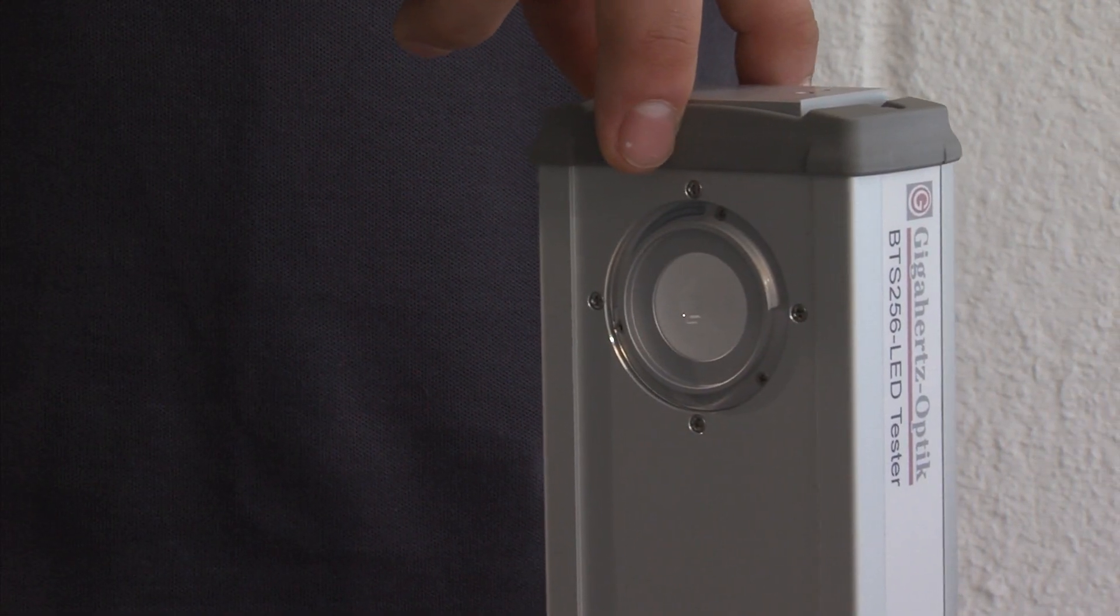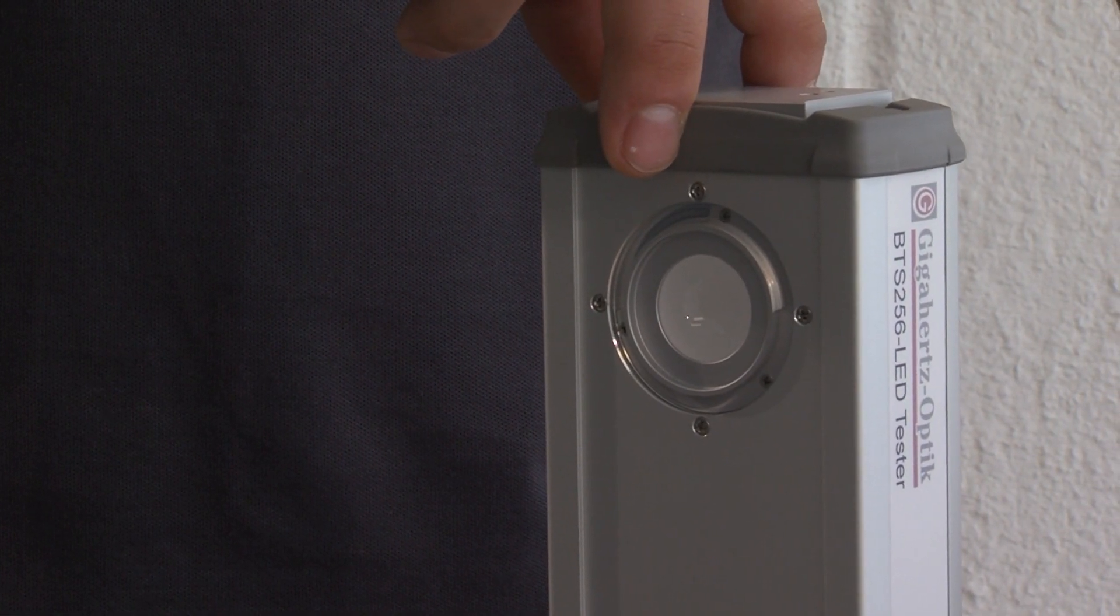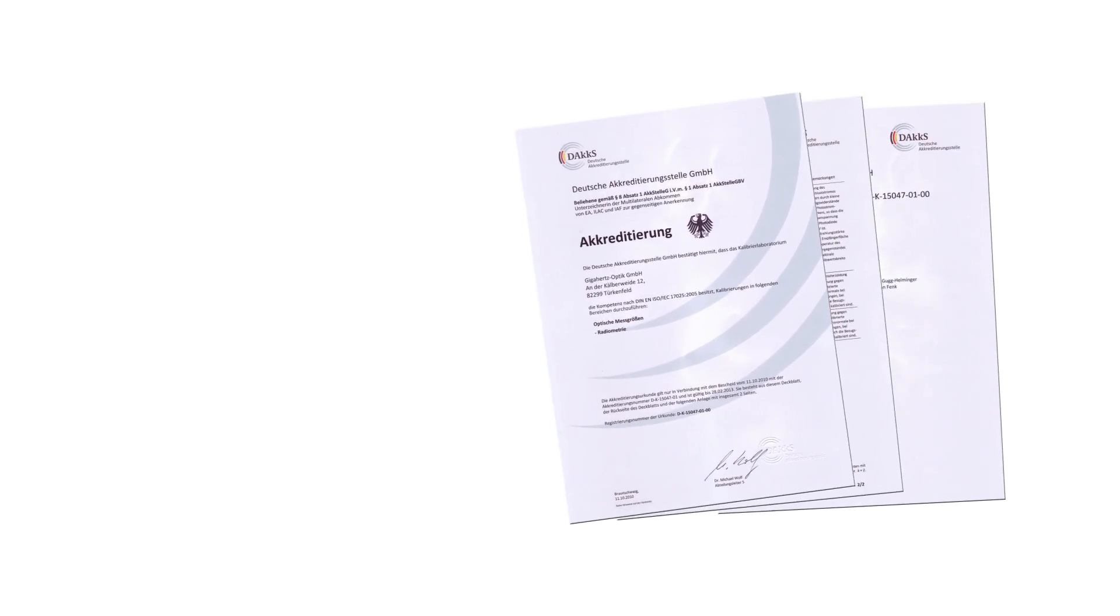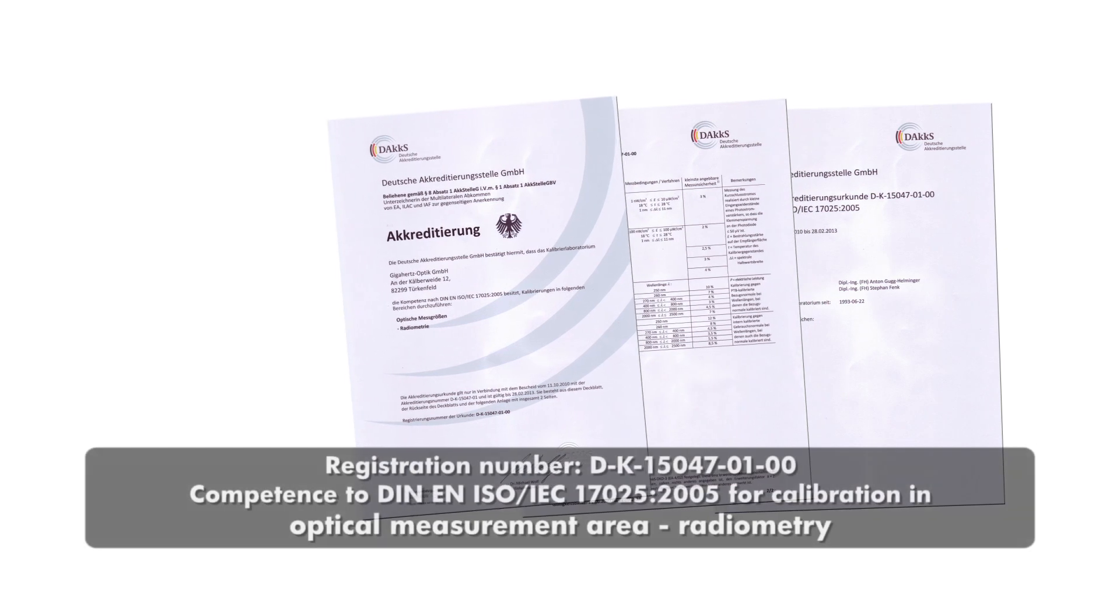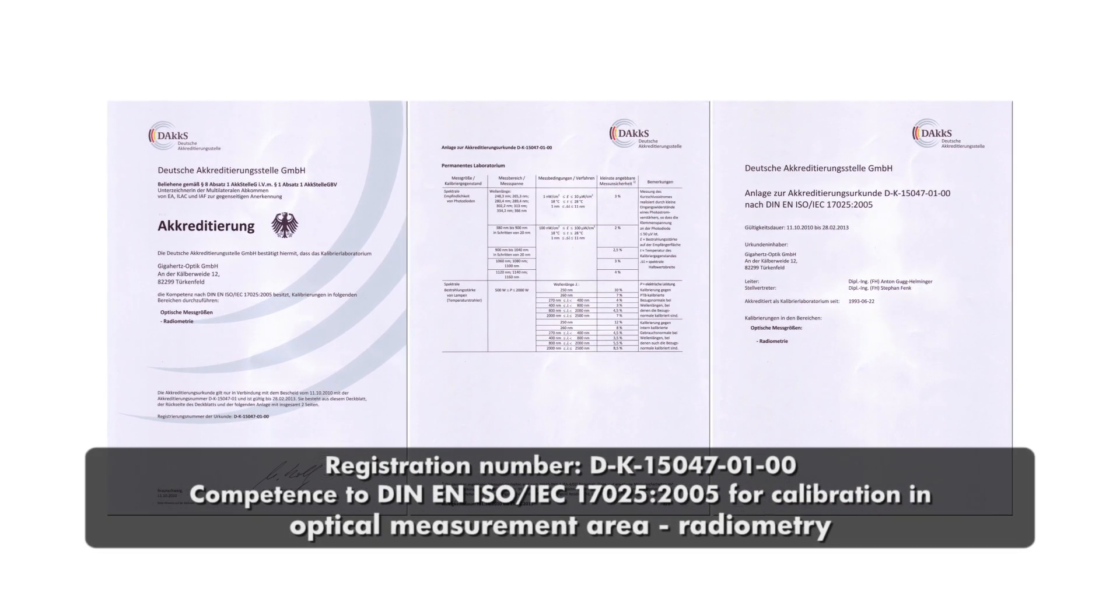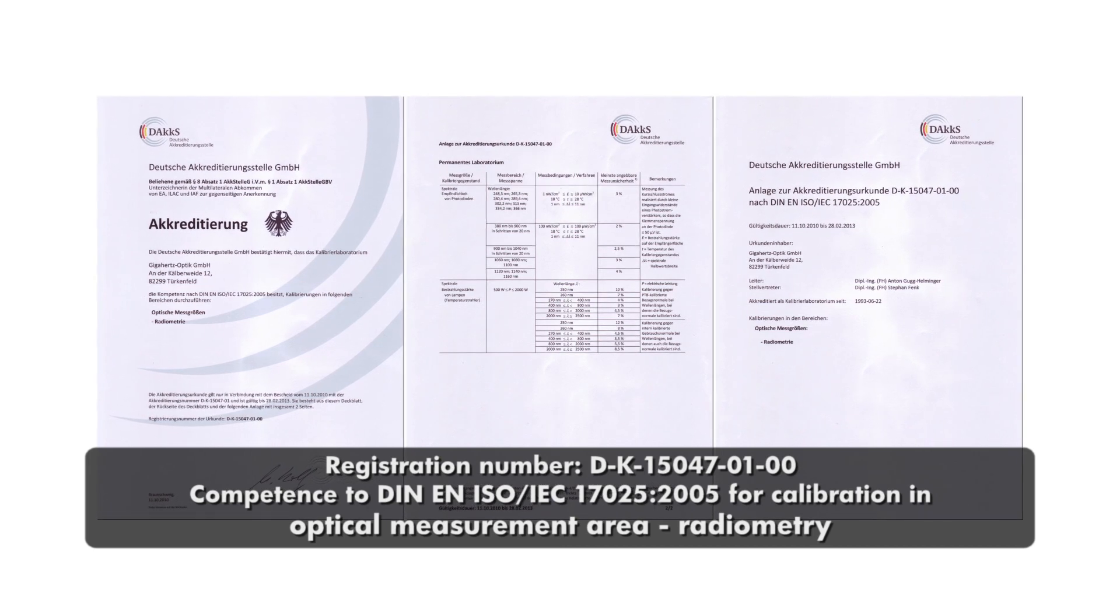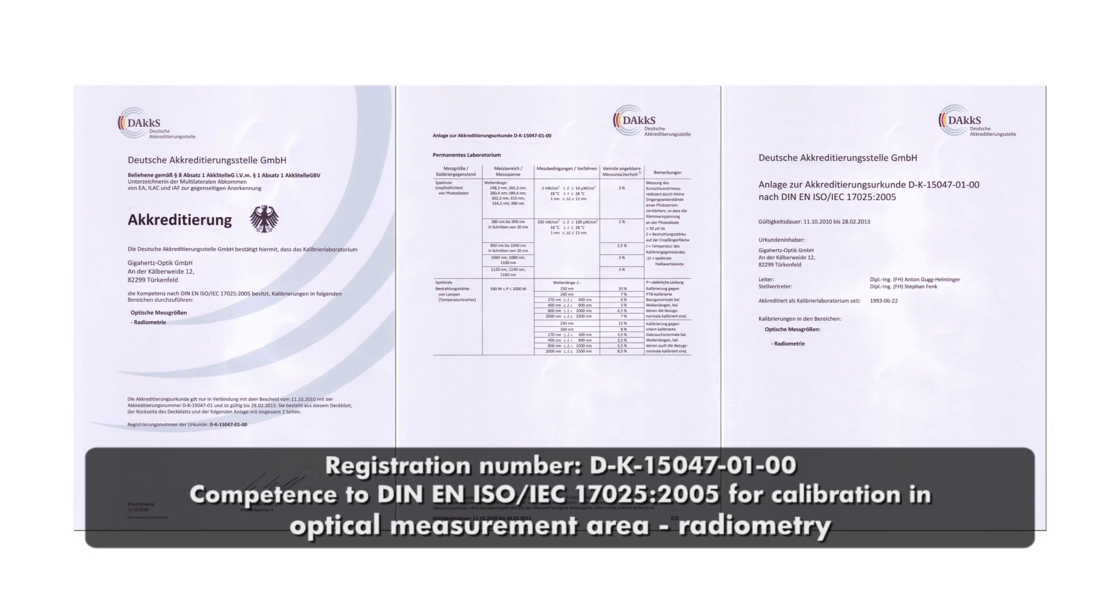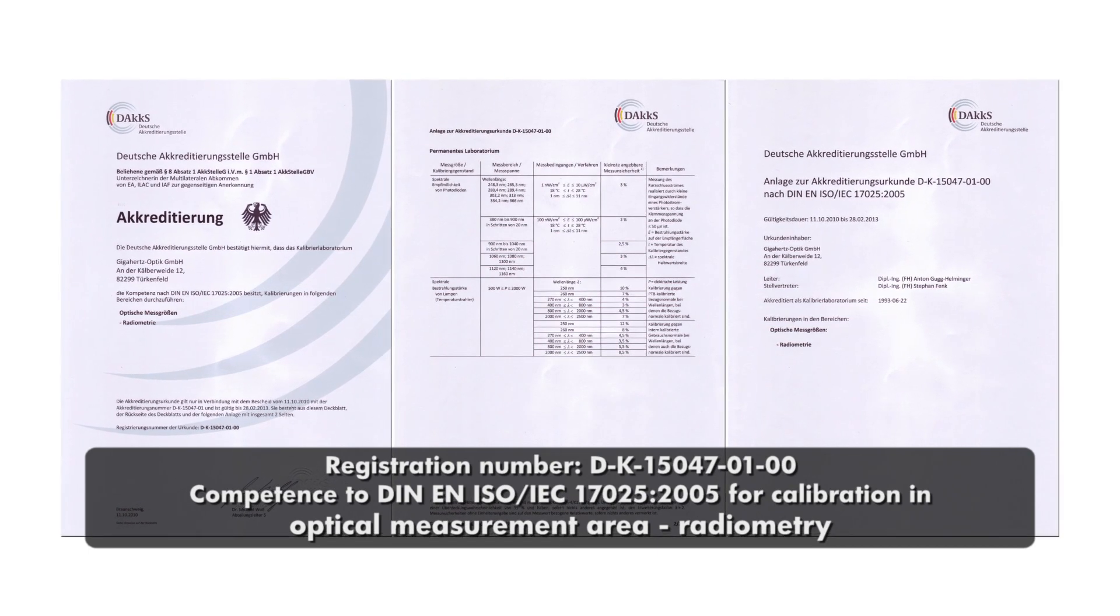Calibration and adjustment of the measuring device is performed in GHz Optics Calibration Laboratory, which is registered with DAKKS, a committee of the Physical Technological Federal Institute in Germany. Sections of the calibration laboratory are DIN, EN, ISO, IEC 17025 accredited.